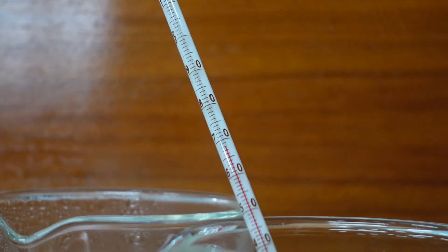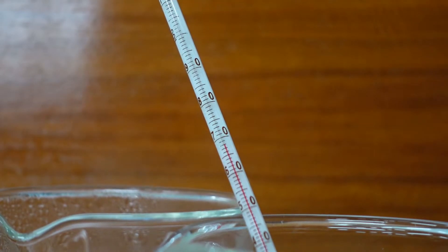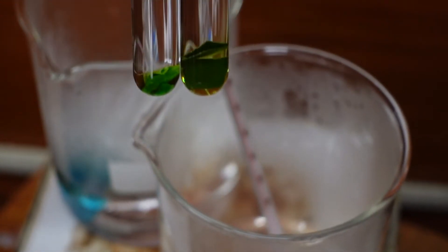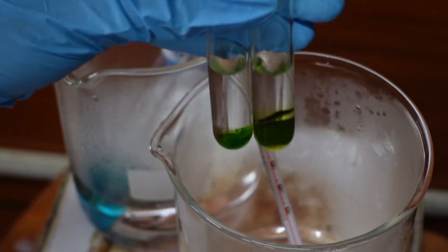Then place these test tubes in a hot water bath about 70 degrees Celsius until the leaves appear bleached.